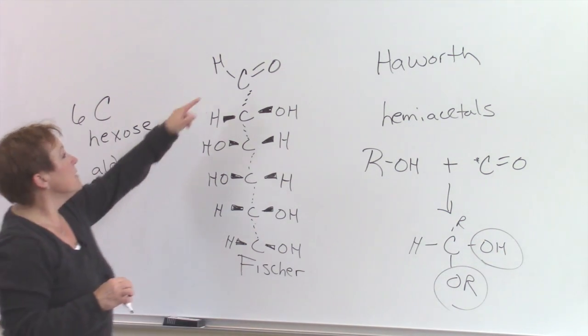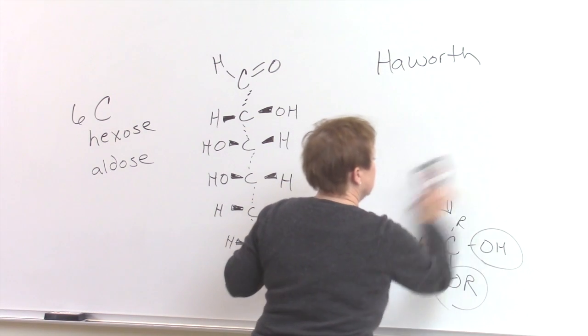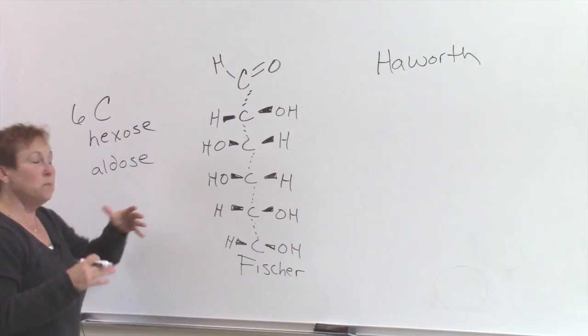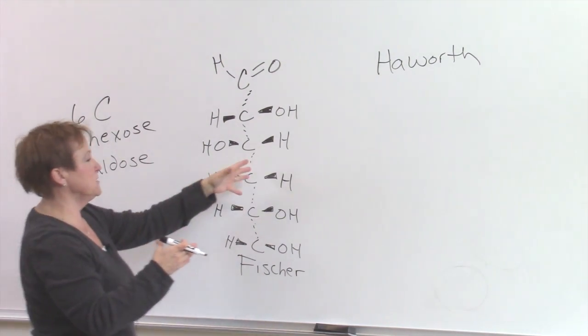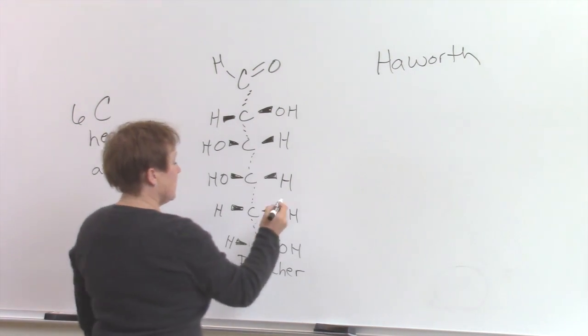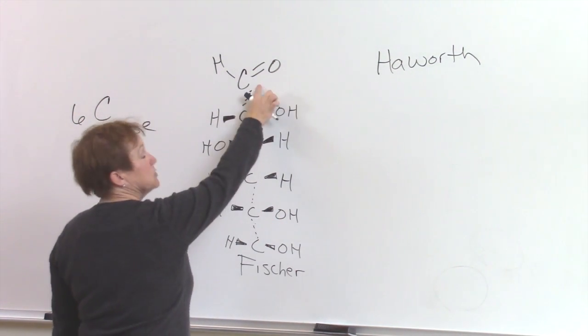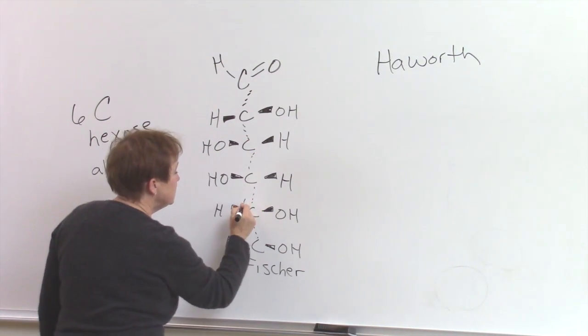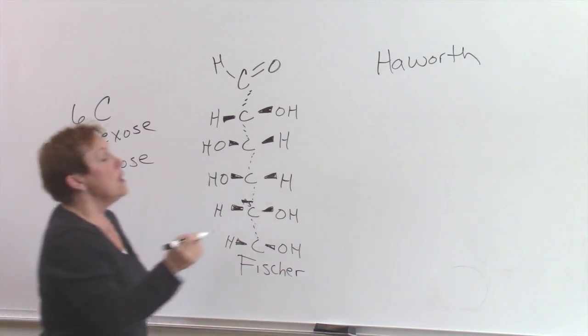We're going to do the same thing here. We have lots of OHs and we have a carbonyl. We're going to make a hemiacetal. Theoretically we can use any of these hydroxyls, but because of the ring structure and bond angles, the hydroxyl that's involved is the number five carbon.